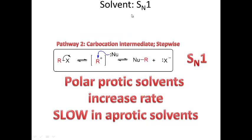What about the SN1 mechanism? If a reaction goes through SN1, you lose your leaving group first, form a carbocation, then the nucleophile comes in and attacks. That particular mechanism is enhanced by polar protic solvents — polar protic solvents increase the rate for a reaction going through the SN1 mechanism, and it is slow in polar aprotic solvents.